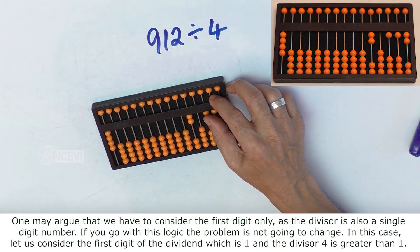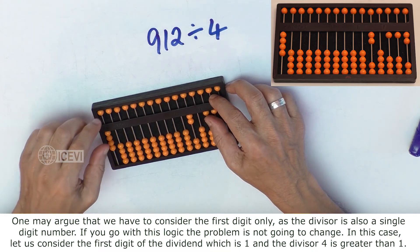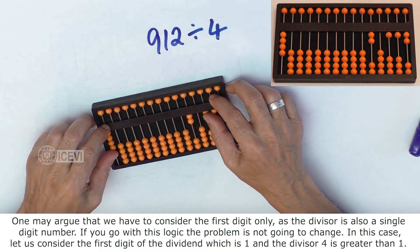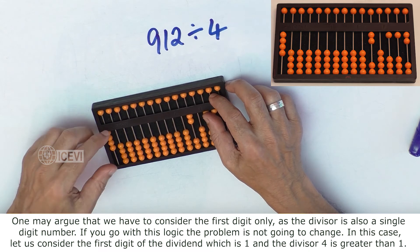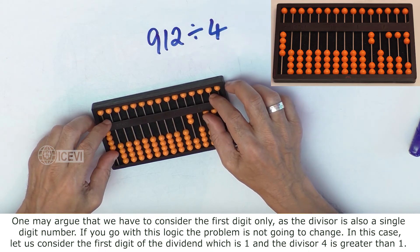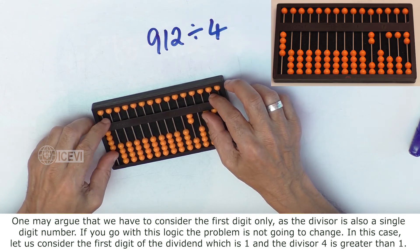One may argue that we have to consider the first digit only as the divisor is also a single digit number. If you go with this logic the problem is not going to change. In this case let us consider the first digit of the dividend which is 1 and the divisor 4 which is greater than 1.